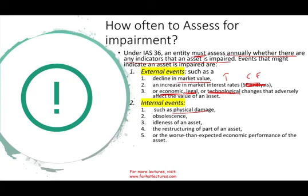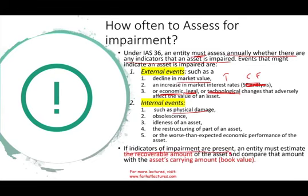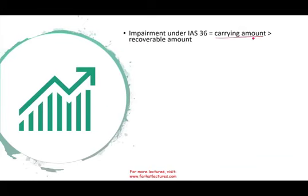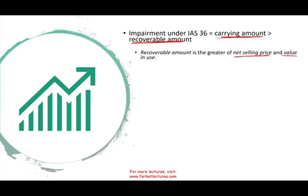Those are the events. If the company feels those indicators exist, they go into the impairment process. If indicators of impairment are present, an entity must estimate what's called the recoverable amount. We compare the recoverable amount of the asset to the asset's carrying value or book value. An impairment exists if the carrying amount — the book value — is greater than the recoverable amount. The recoverable amount is the greater of net selling price or value in use.